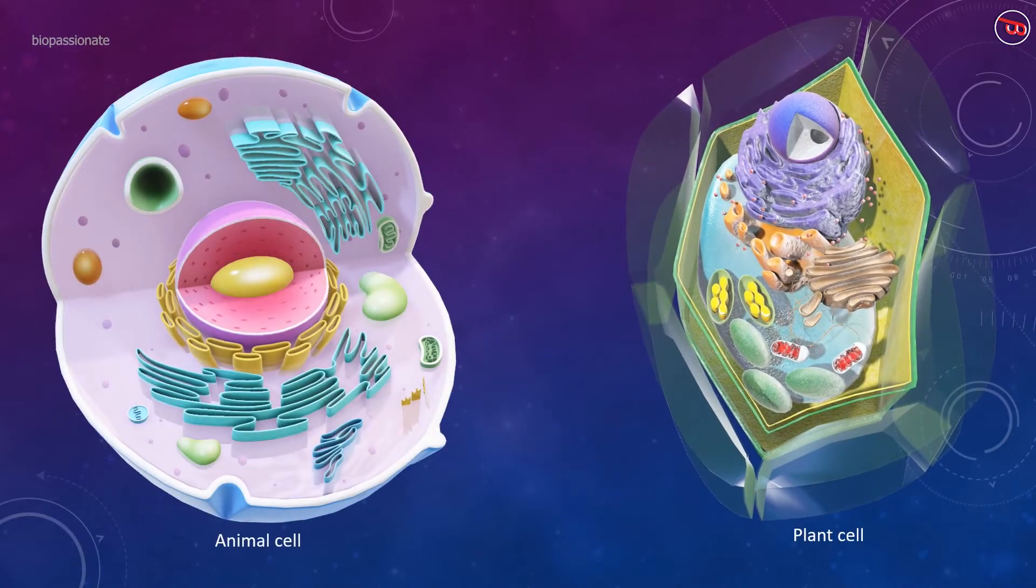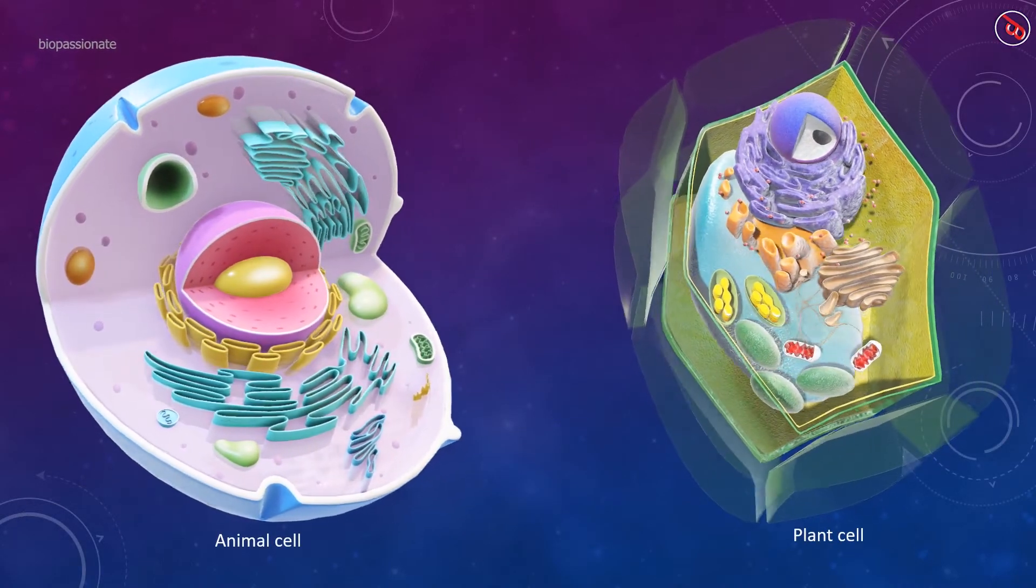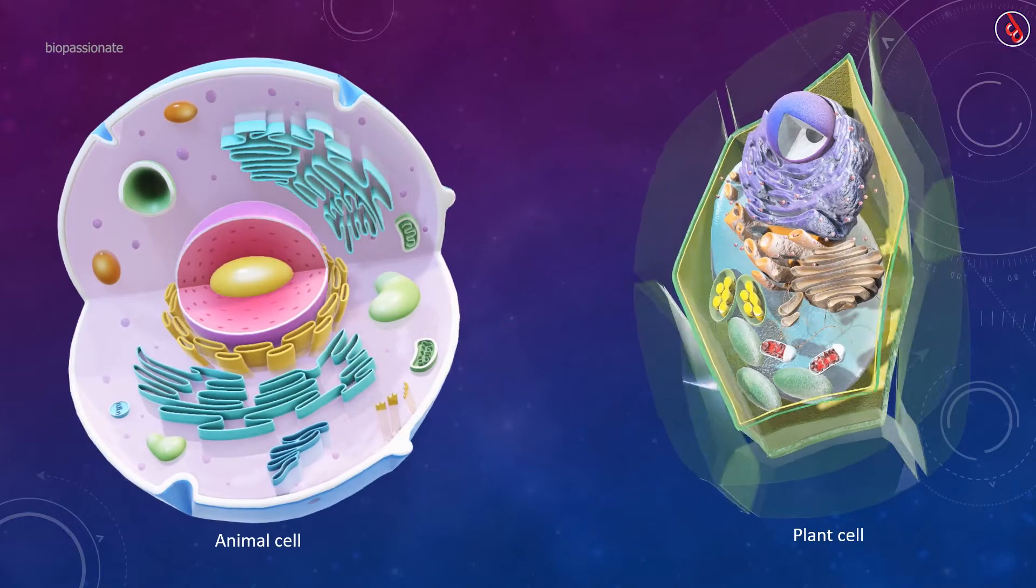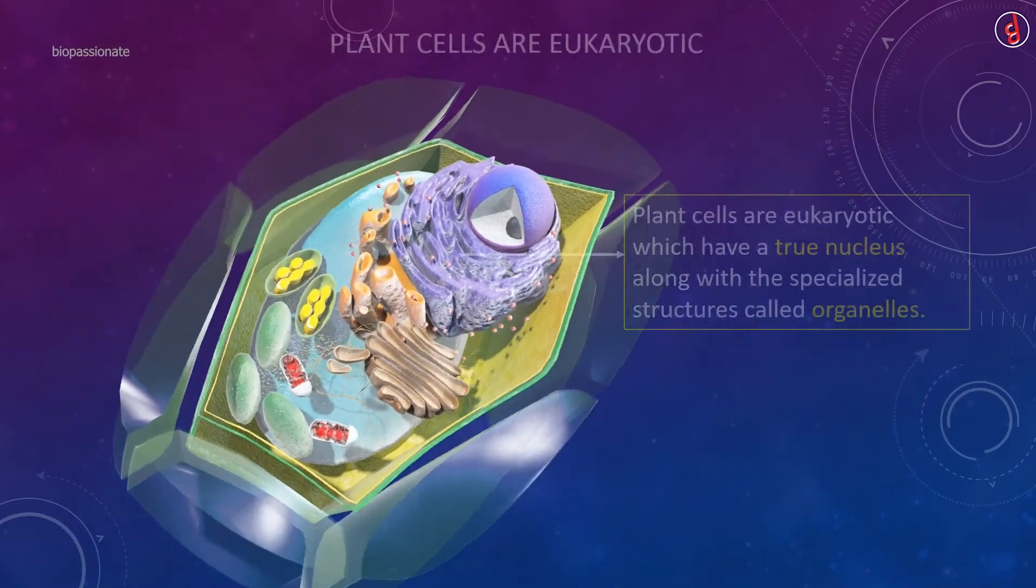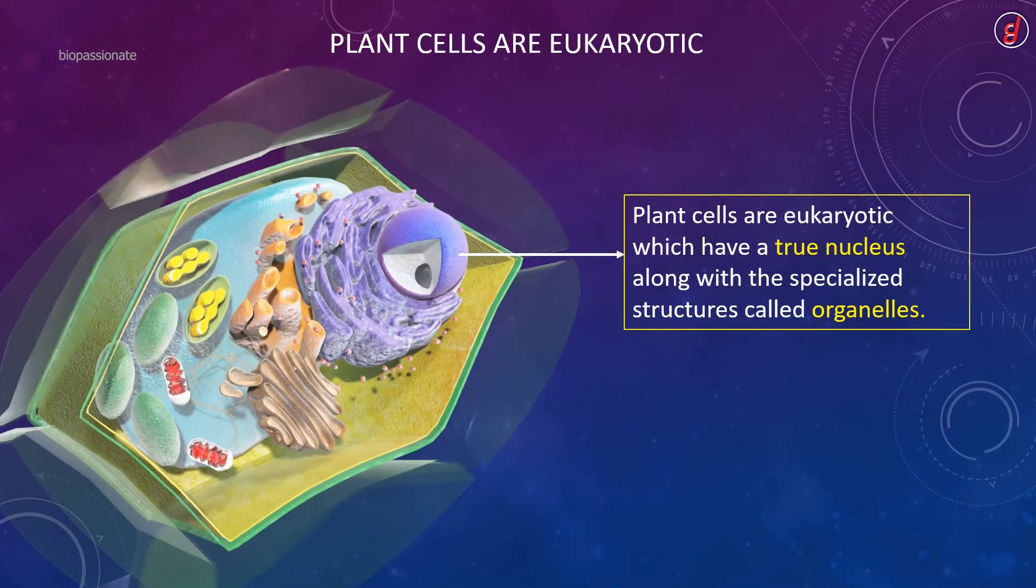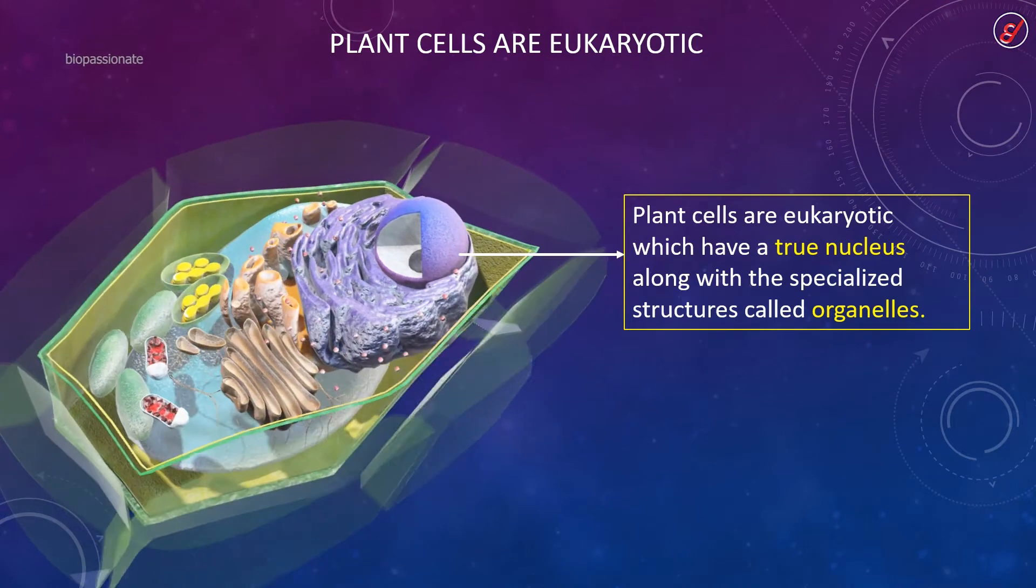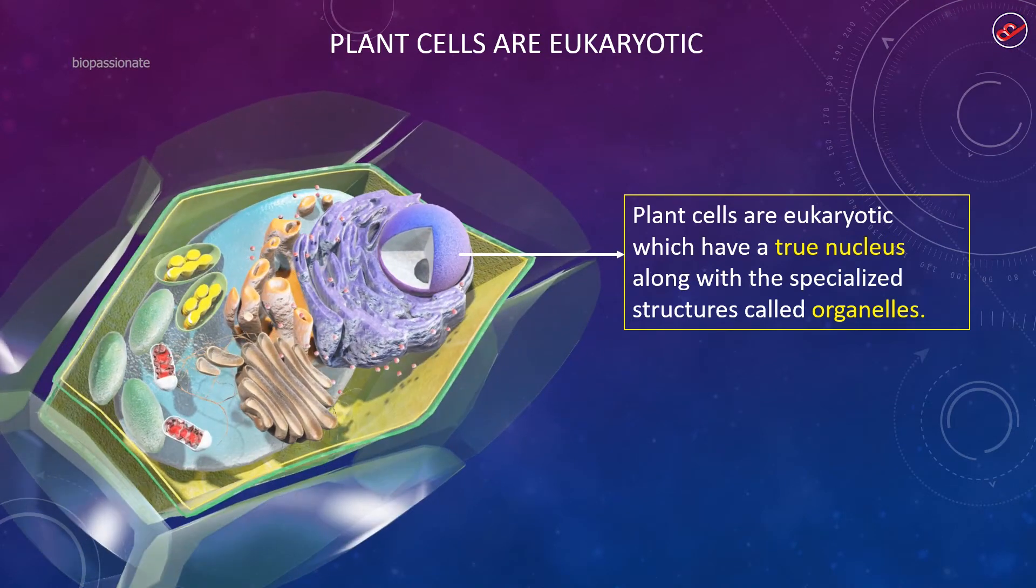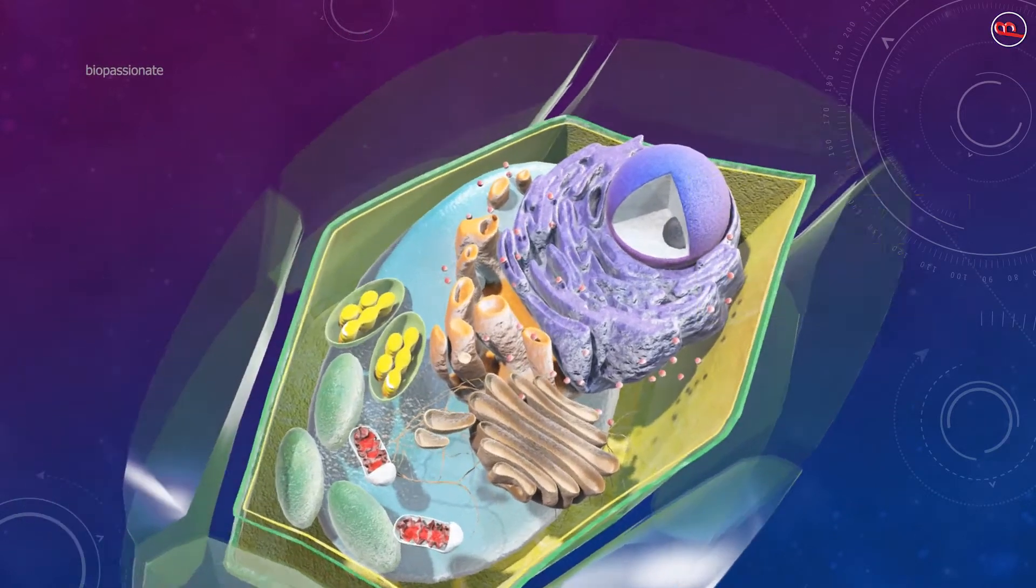Plant and animal cells are more or less similar with few exceptions. Plant cells are eukaryotic which have a true nucleus where the genetic materials are bounded by a membrane. Along with the true nucleus, there are specialized structures called organelles present.